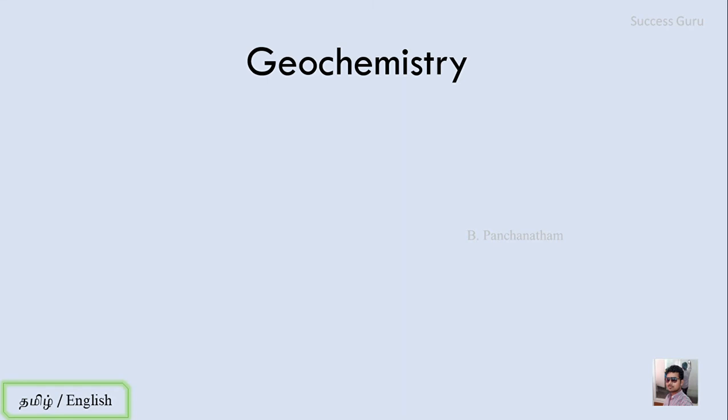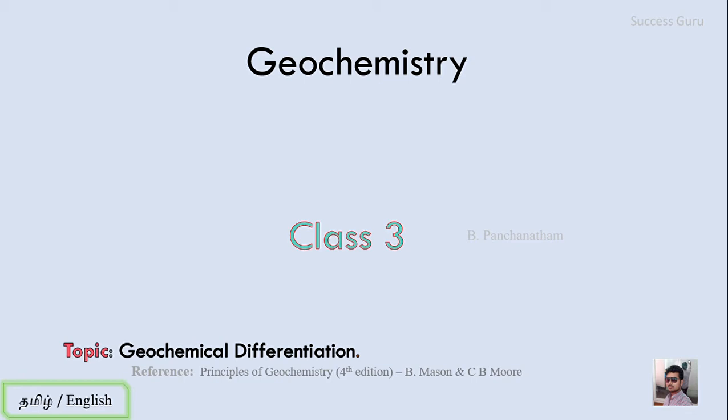Hey guys, we are in the Geochemistry Lecture Series and this will be Lecture No. 3. The topic of discussion is Geochemical Differentiation and the book which I referred is the Principles of Geochemistry by Mason and Moore.